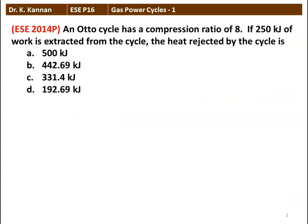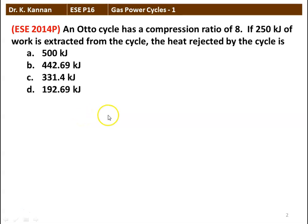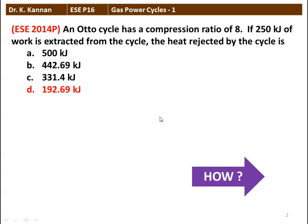The first question: an Otto cycle has a compression ratio of 8. If 250 kilojoules of work is extracted from the cycle, the heat rejected by the cycle is — there are 4 options given. The correct option is option D: 192.69 kilojoules. We will see how in the next slide.